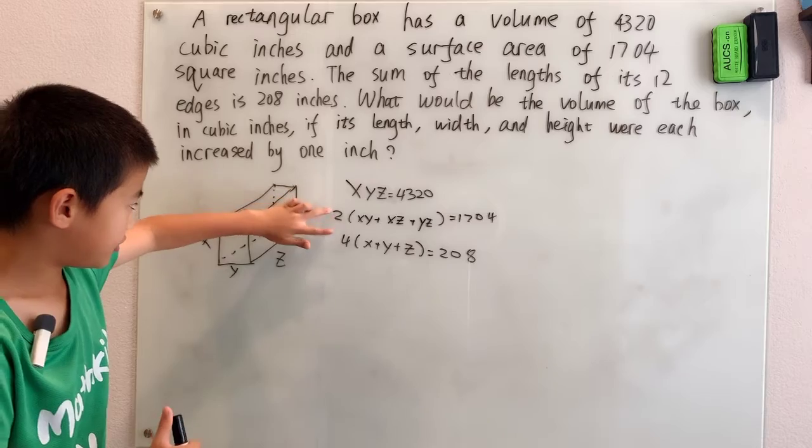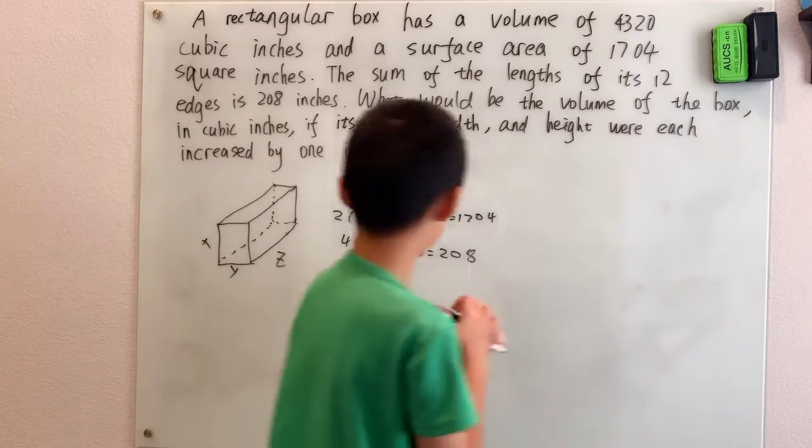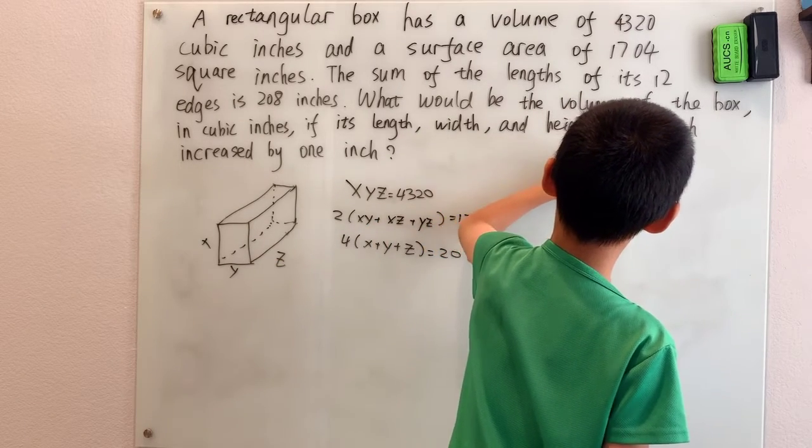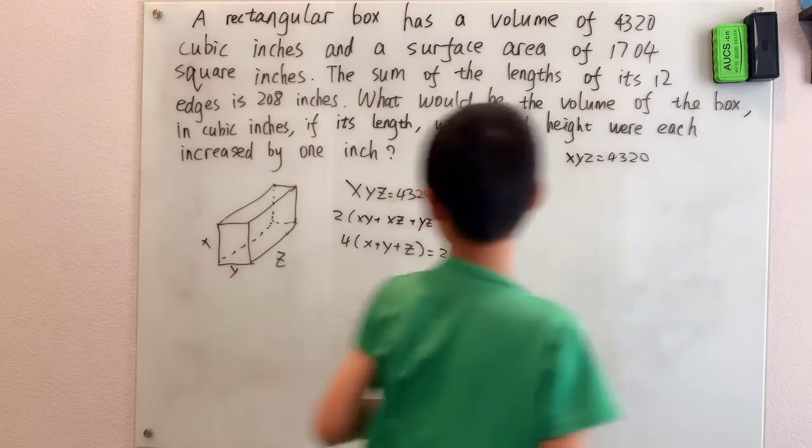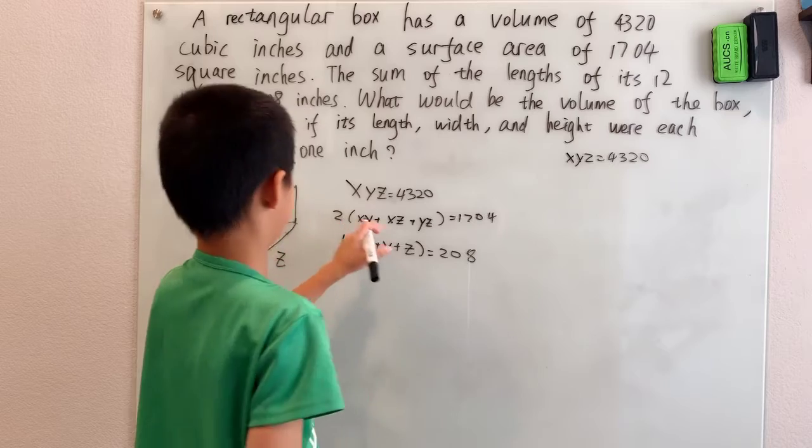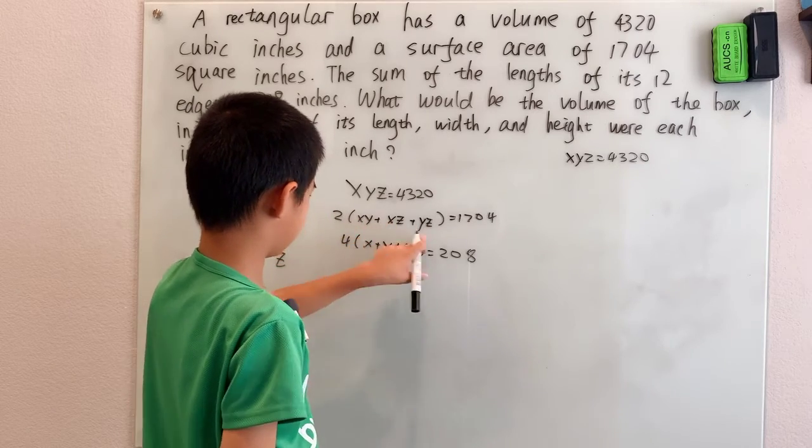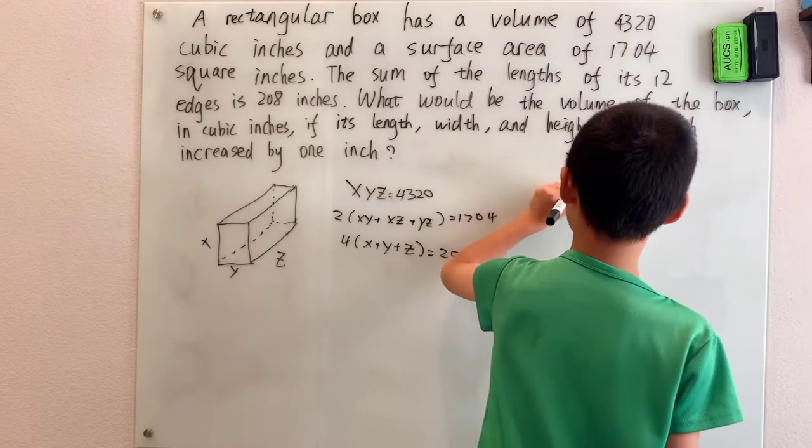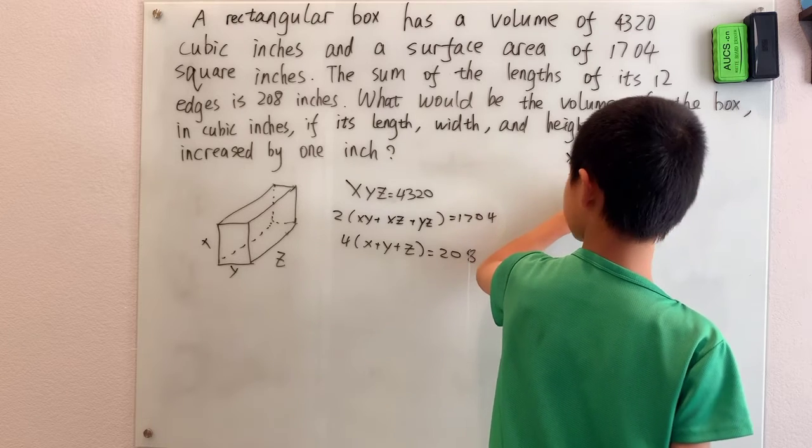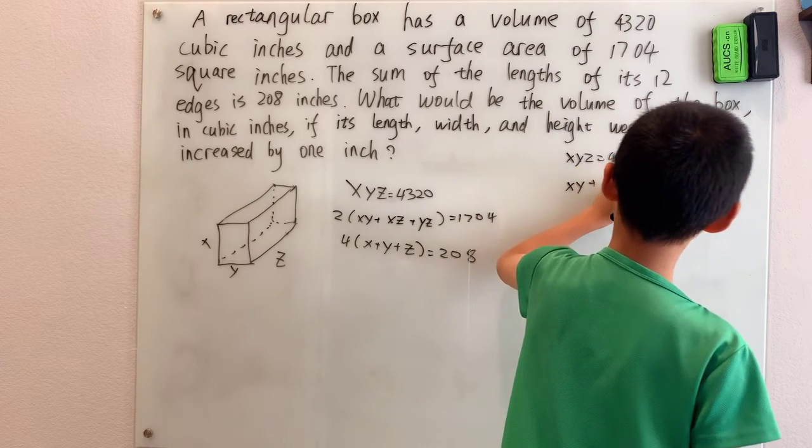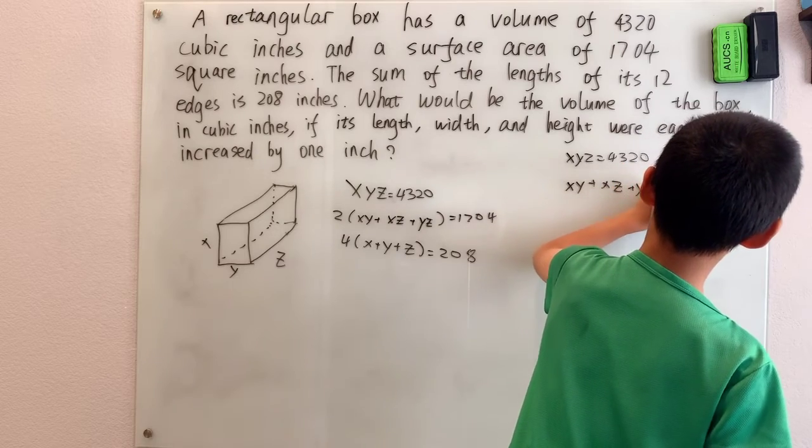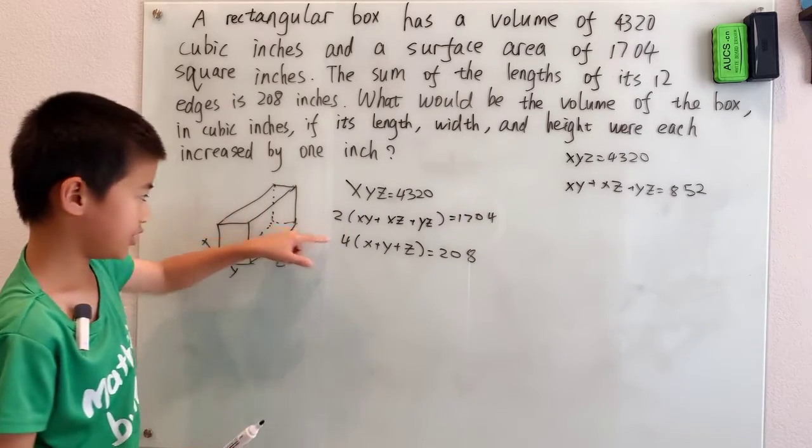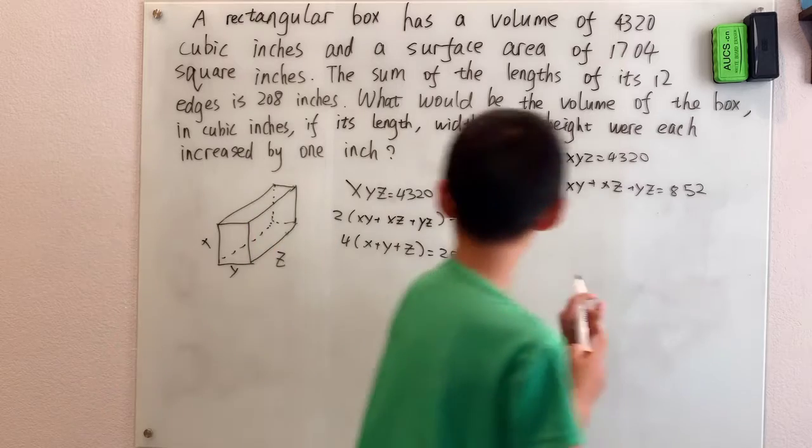Okay, now let's see this two and four. We're just going to get rid of those by dividing this out. Well, xyz, you can't do much with that, so I'll just leave that up there. Now, 2(xy + xz + yz), divide by two makes 852. And for here, we just divide by four, which makes 52.